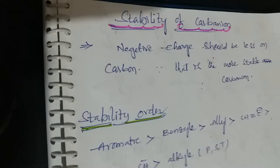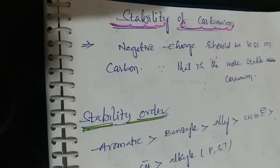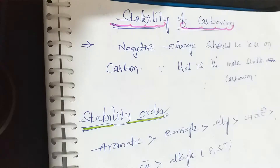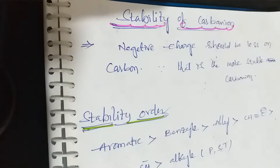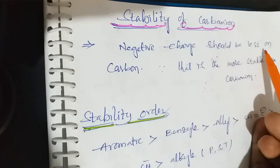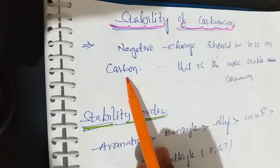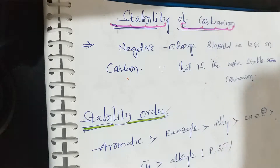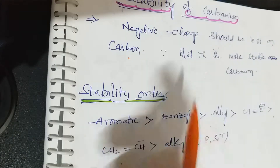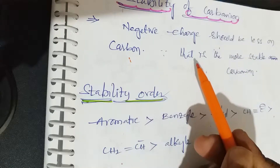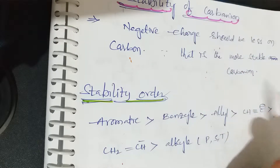Hello friends. The next topic is stability of carbon anion. What is the stability of carbon anion? The statement is: negative charge should be less on carbon — that is the more stable carbon anion.